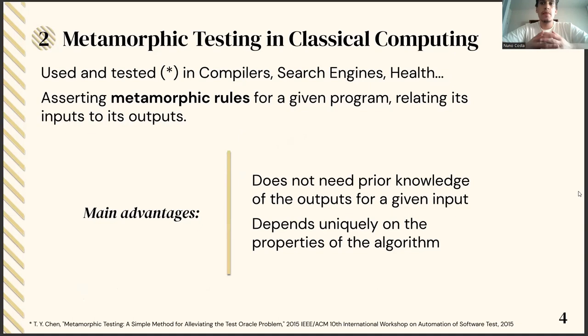Metamorphic testing is a mechanism that tries to assert rules or properties for a given program in such a way that the inputs and outputs are closely related. An easy example would be for a search engine, which should obtain less results for the query autonomous car when compared to the results of the query car. This testing mechanism is already used in several fields, such as compilers and health, and its main advantages are the fact that no prior information of the outputs for a given input is needed, and that it depends solely on the properties of the algorithm.